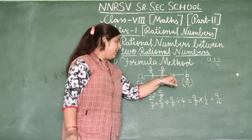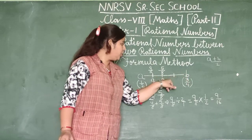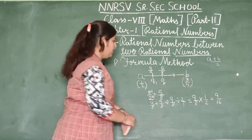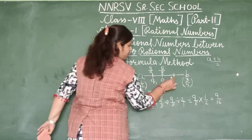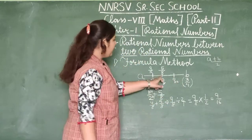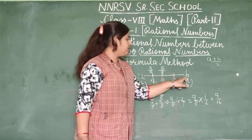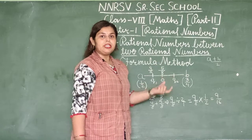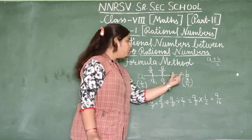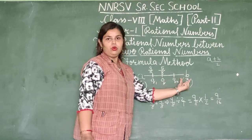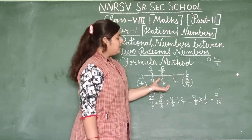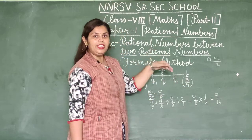To find another rational number Q2, we find it between Q and B. We add Q plus B and divide by 2. This gives us the second number between the two rational numbers.